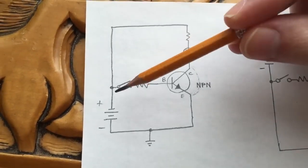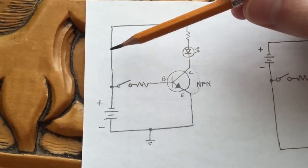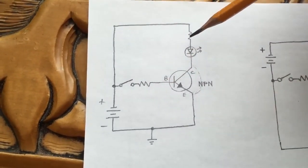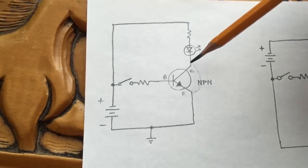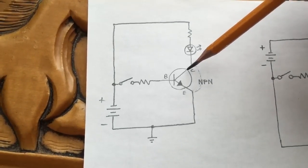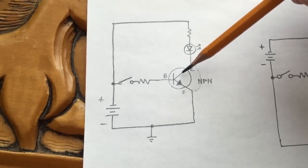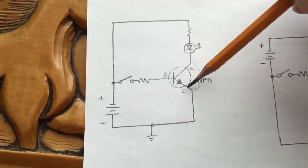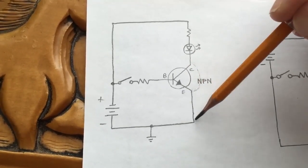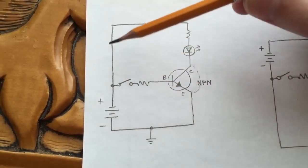Now we have another current path from the positive terminal of the battery, through this resistor, through the LED, into the collector of the transistor. Because it's switched on, the collector is shunted to the emitter, and current flows out the emitter back to the negative terminal of the battery.